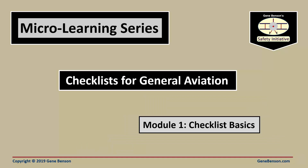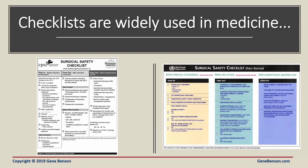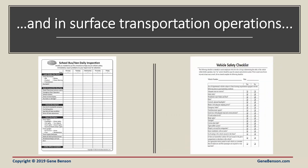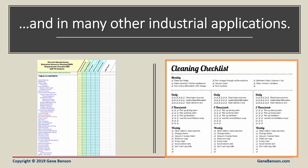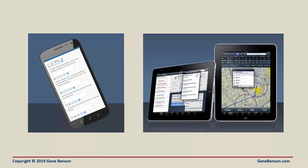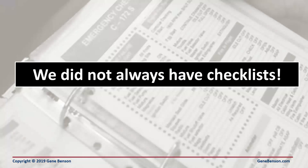Let's begin with a discussion of checklist basics. Today, checklists are used in many different industries for many different functions. The medical profession has embraced the use of checklists to help prevent errors, particularly in surgery, in surface transportation operations, and in many other industrial applications. Sometimes checklists are printed and sometimes they are electronic. We didn't always have checklists — let's take a quick look at their origin.